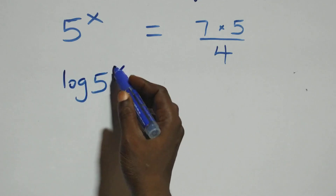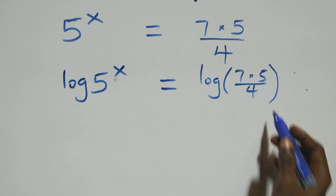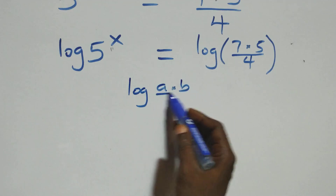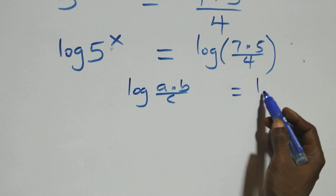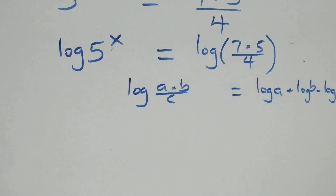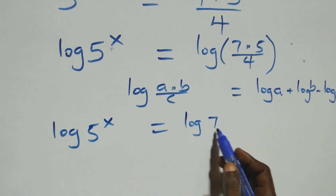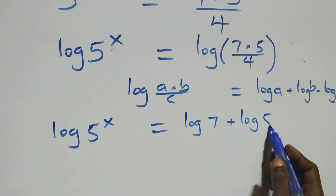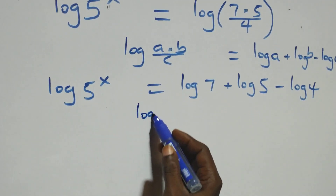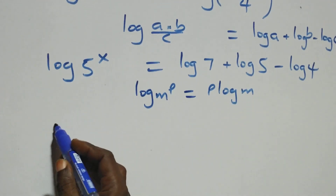Then the next step: we take the log on both sides. So we have log of 5 raised to power x equals to log of 7 times 5 over 4. On this side, for the reason we have log a times b over c, we can express this as log a plus log b minus log c.